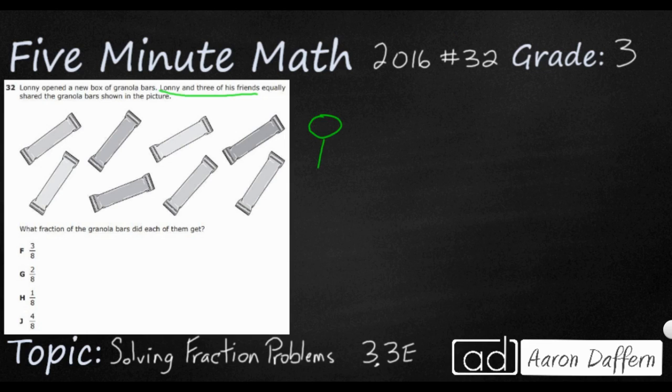So this is going to be Lonnie and then I'm going to draw three friends. We've got Simon, we've got Alvin, and we've got Theodore. Now the first trick is going to be recognizing that there are four people, not just three. This three is a number that shows up and even if you wanted to split this among three it really wouldn't work, but it's Lonnie and three friends, therefore it is four people.